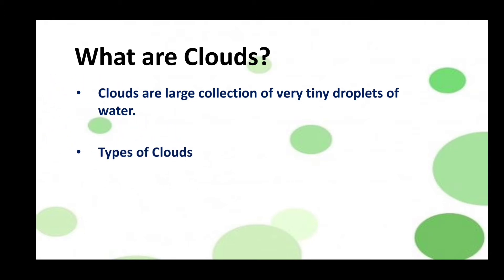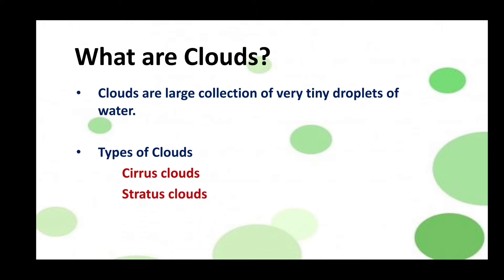There are four different types of clouds. They are cirrus clouds, stratus clouds, cumulus clouds, and nimbus clouds.